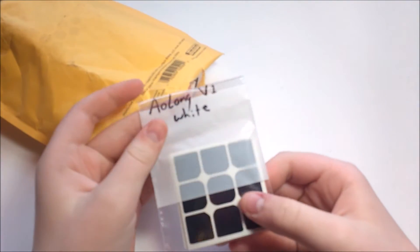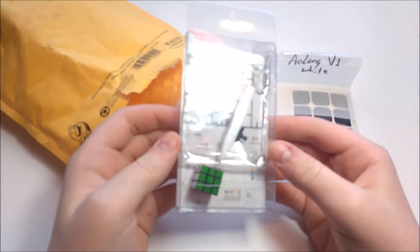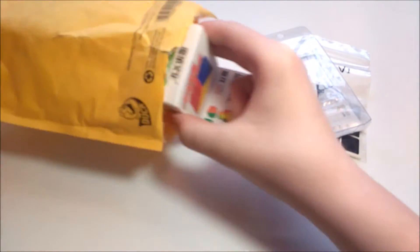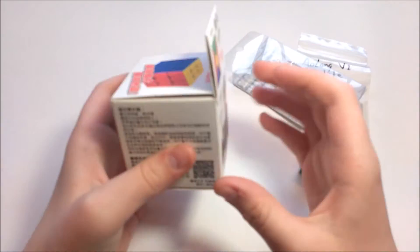So, first of all, here's some Aolong V1 full-fitted stickers, the Maru Nano Cube, which is assembled and stickered, which is very nice. Here's the 1x1, and the Moyu Aolong V1.